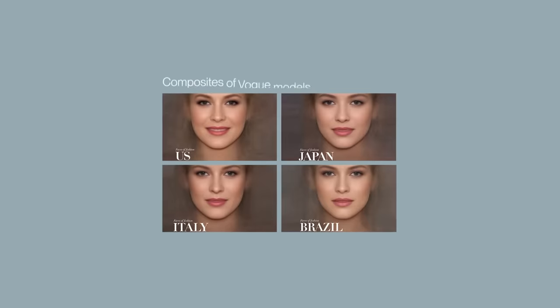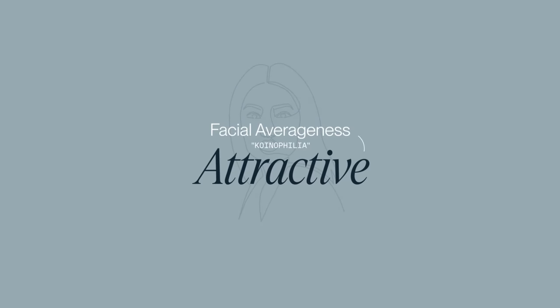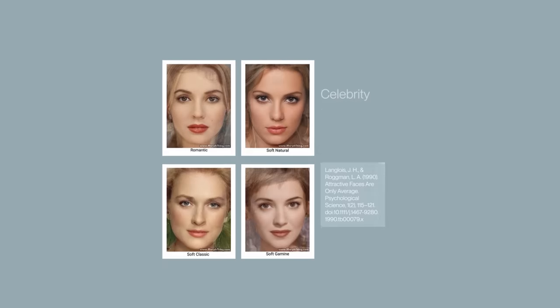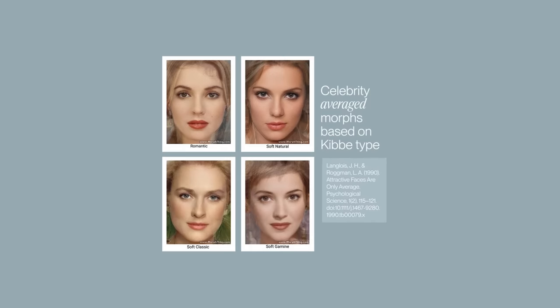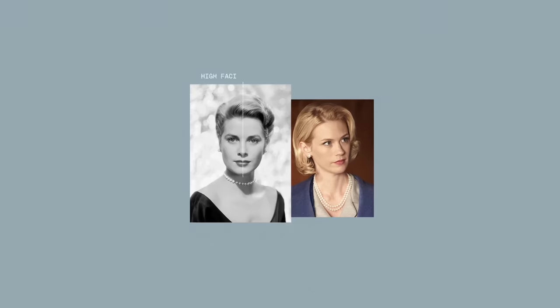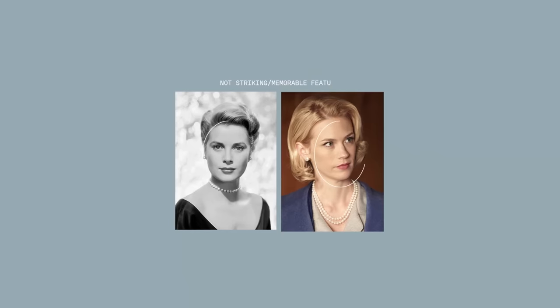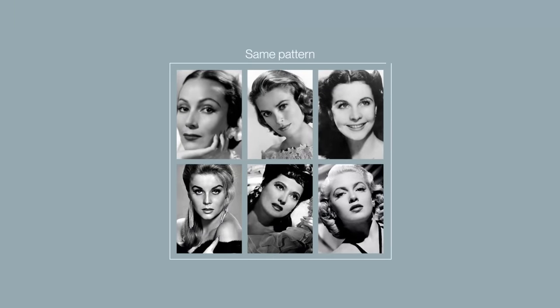Grace Kelly is named as the best celebrity example of the classic body and face type in David Kibbe's book Metamorphoses, characterized by high facial harmony with balanced, evenly spaced, and symmetrical features. Of course, these essential elements of classical beauty are still relevant today. As we've covered at length, most people tend to find facial averageness quite attractive — a face with few facial quirks that aligns closely to the configuration of their population average. January Jones and Grace Kelly both have high facial symmetry and feminine features, but there's not one particularly striking or memorable feature on either face.